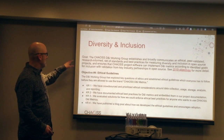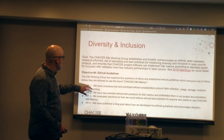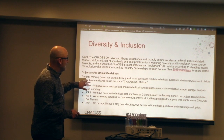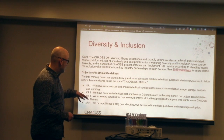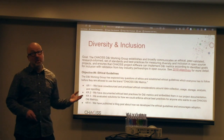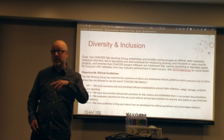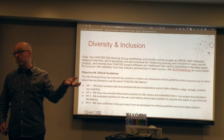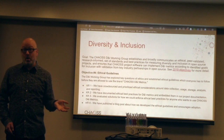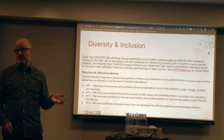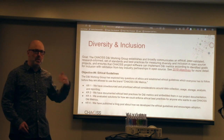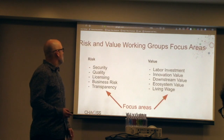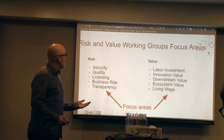For diversity and inclusion, their mission is to look at ethical, peer-validated research that informs standards for measuring diversity and inclusion in open source. Their objective for this year is looking at the ethical guidelines that people follow before they're allowed to use the CHAOSS D&I brand. The D&I working group takes seriously the responsibility to the community — not just throwing a label out there — but working in partnership with Mozilla and the Linux Foundation to define meaningful practices.